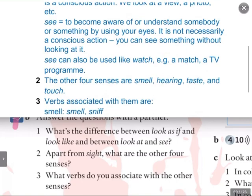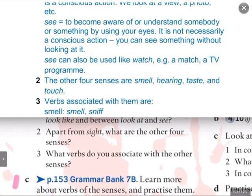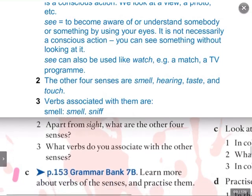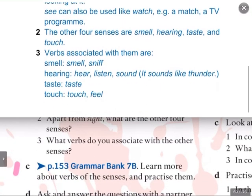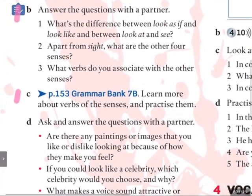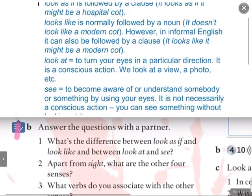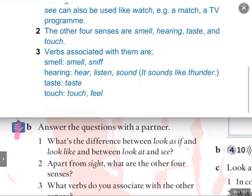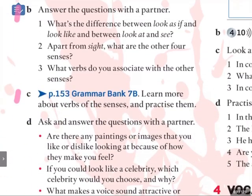Question number two — the other four senses: smell, hearing, taste and touch. And question number three, verbs associated with the other senses. For smell, we have 'smell' and 'sniff'. For hearing, we have 'hear', 'listen' and 'sound' — it sounds like thunder. Taste is clearly 'taste'. And touch can be 'touch' or 'feel'. So those would be the verbs associated with the other senses.